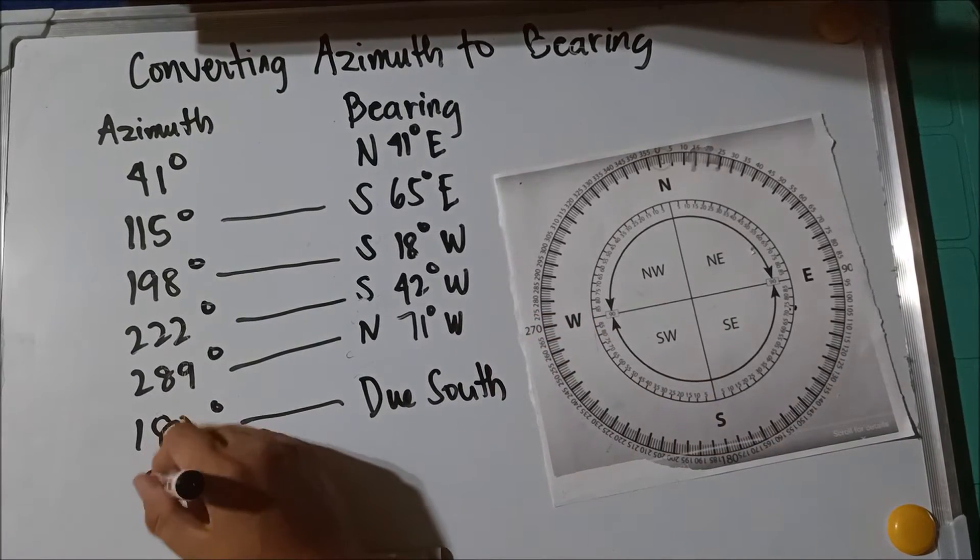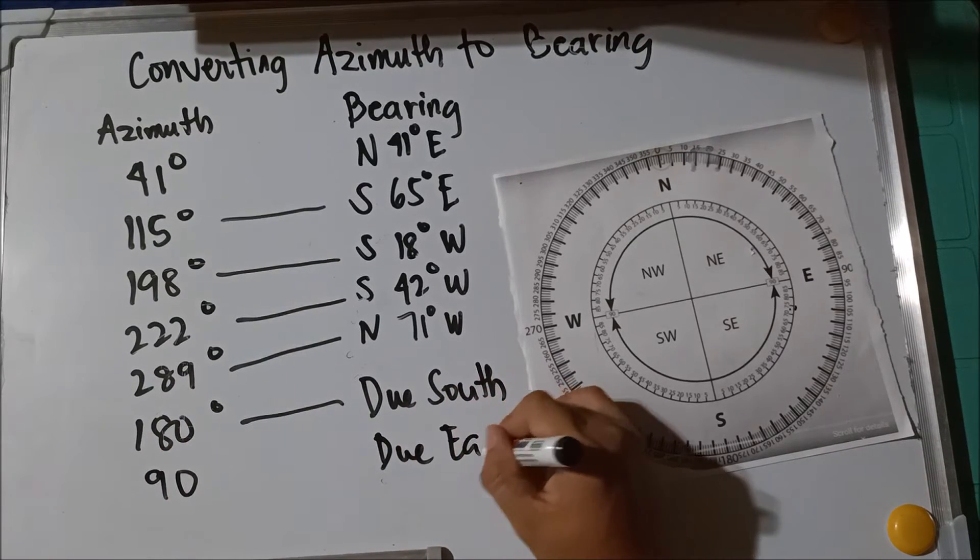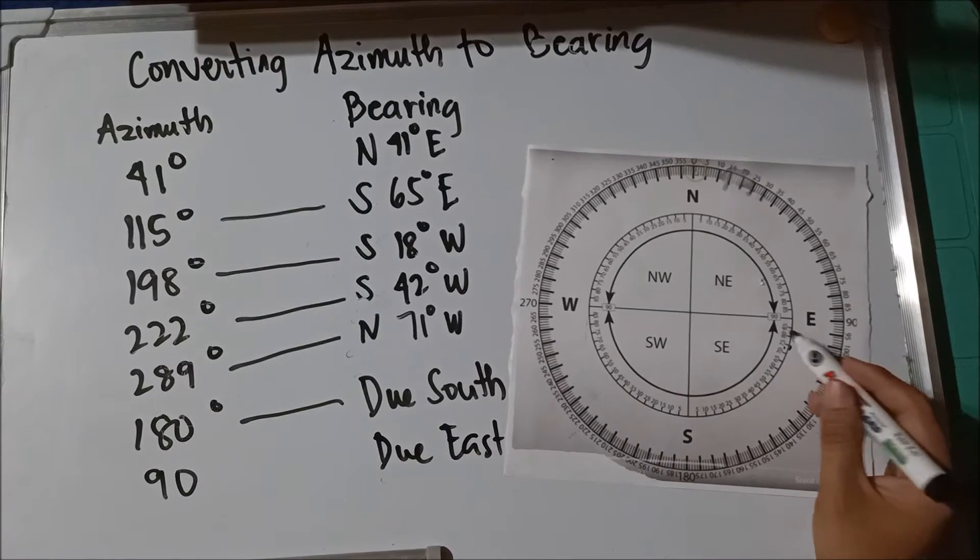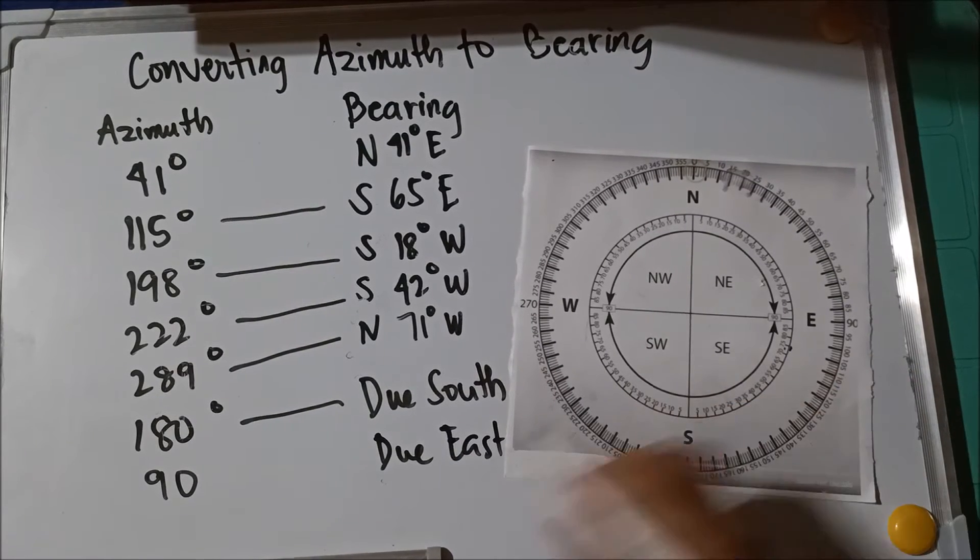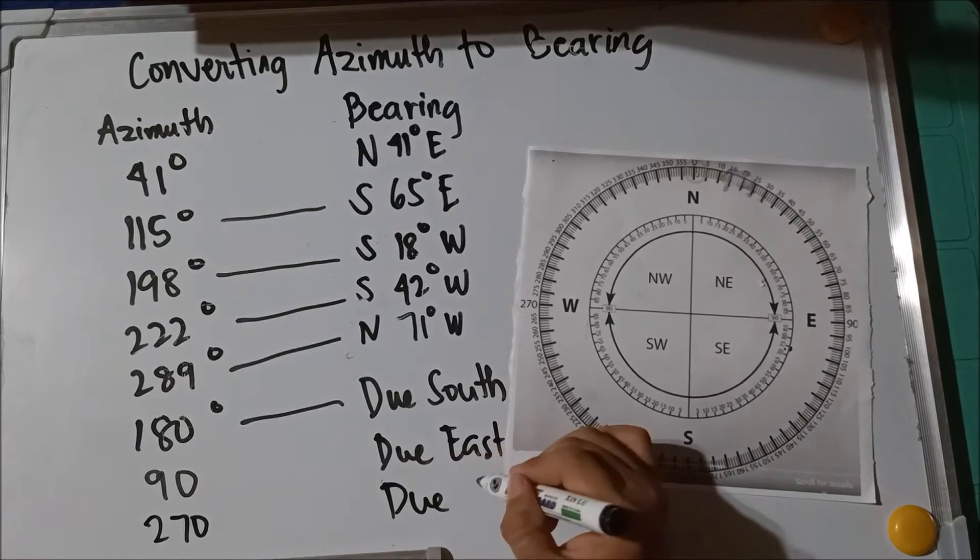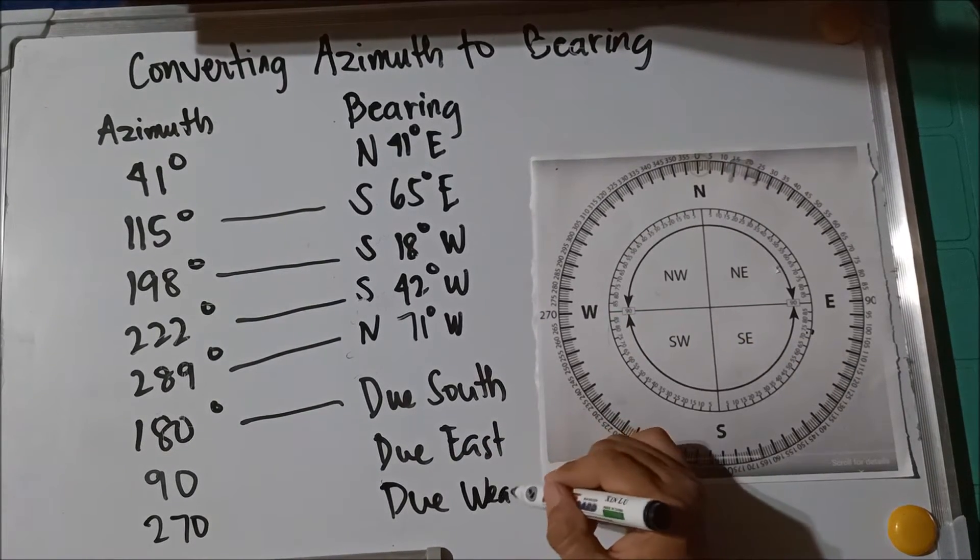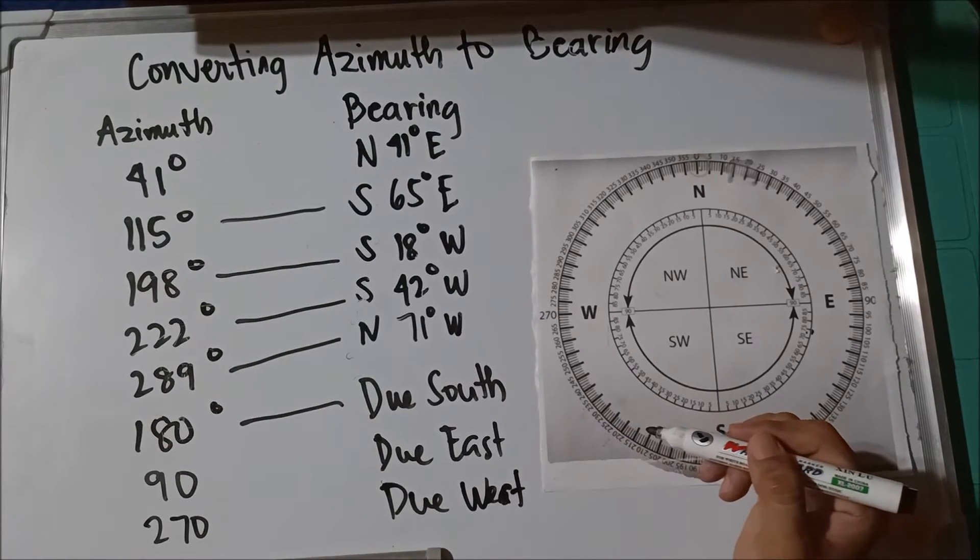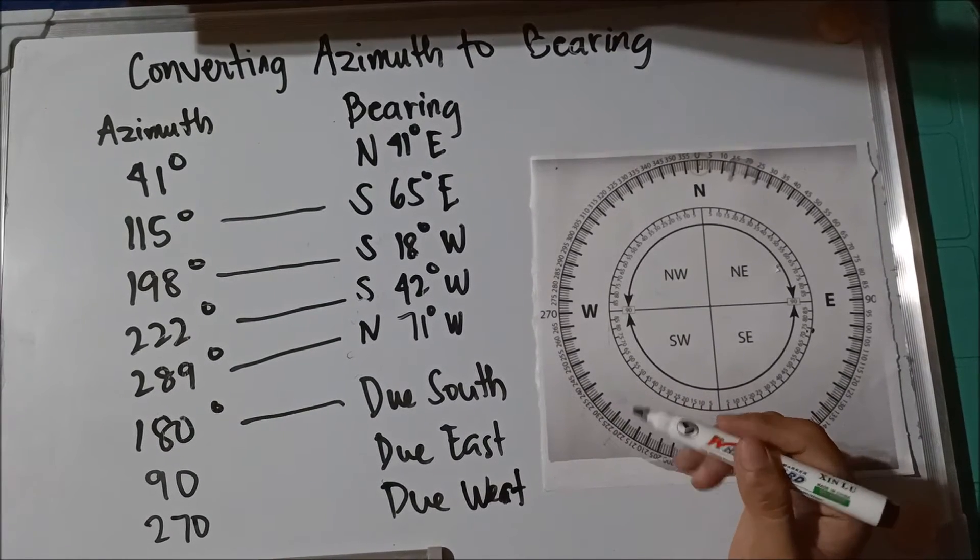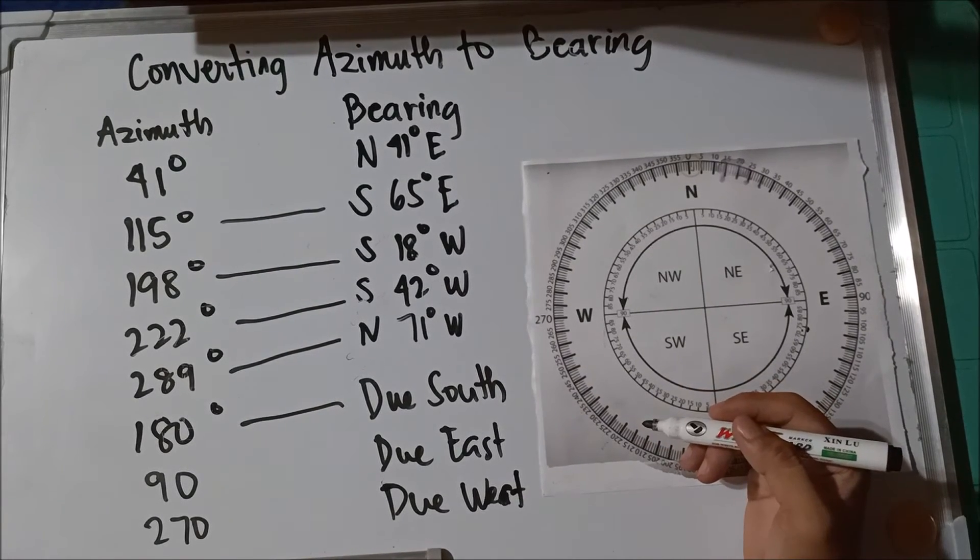If 90, of course due east, because 90 degrees is east. And for example 270, it's due west. Of course 270 is west, due west.